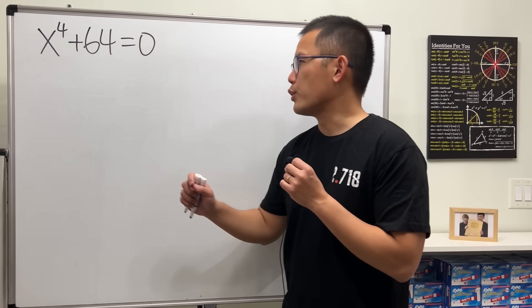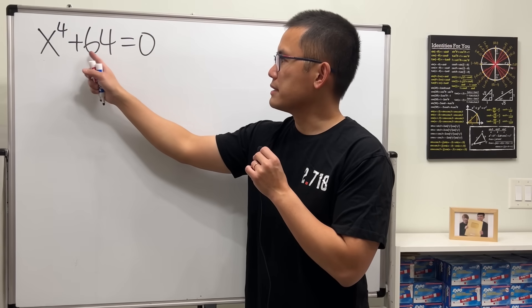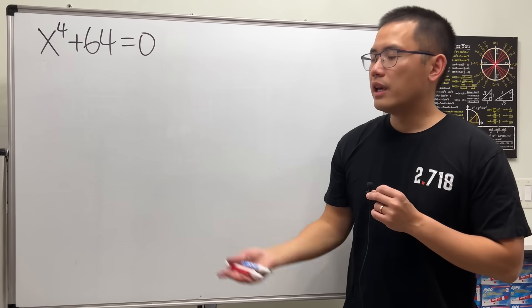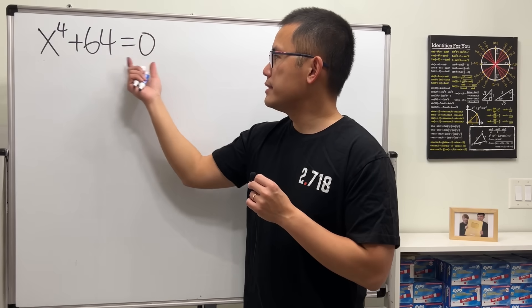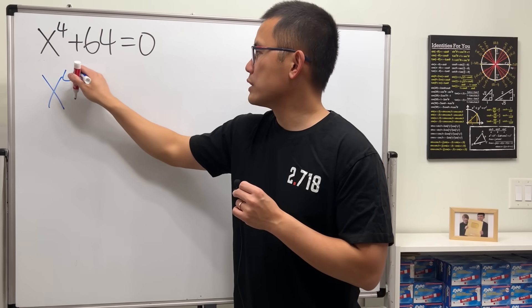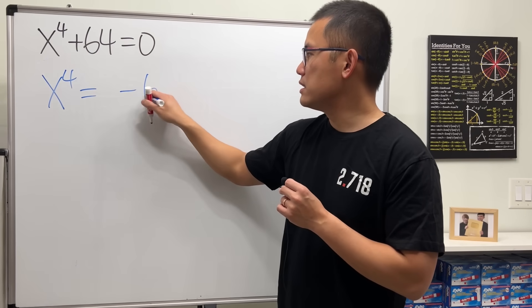So let's talk about how we can solve the equation x to the fourth power plus 64 is equal to 0. And you might be like, let's subtract 64 to both sides, and we get x to the fourth power equals negative 64.